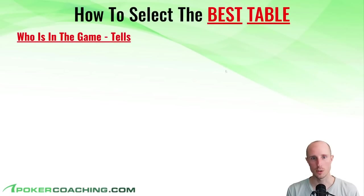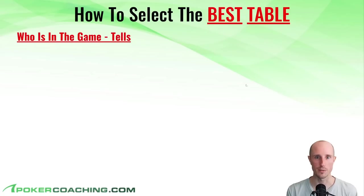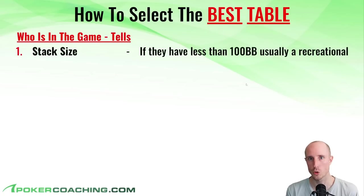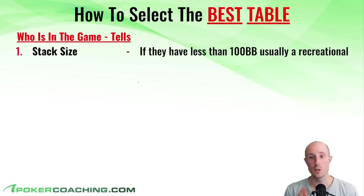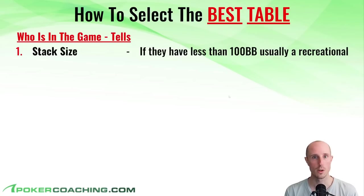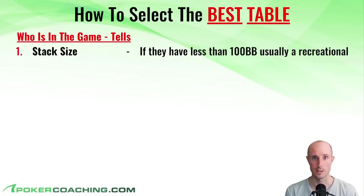Let's continue on how to select the best table — this is for when you don't have players labeled or any previous information, but want to find some spots. These are the in-game tells. The best one, hands down, is stack size. If you see someone playing with less than 100 big blinds, they're probably going to be a recreational player — often playing with all the money in their account on that table, not practicing good game selection, probably not practicing great hand selection, and definitely there to gamble.